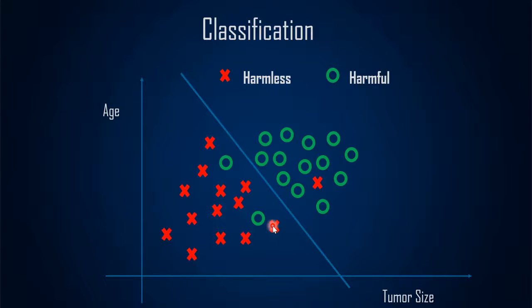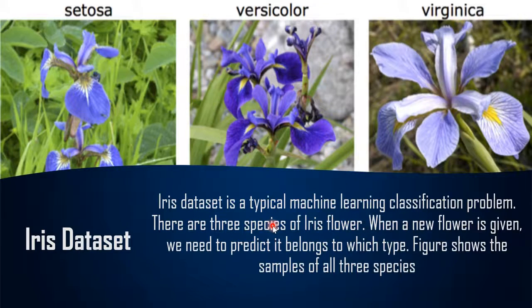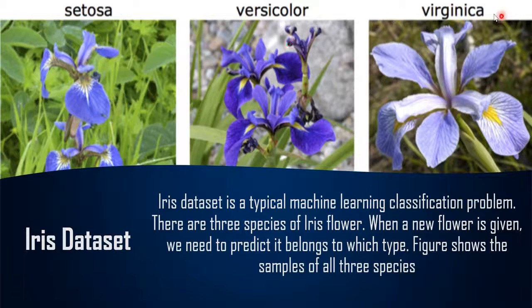Let's see one more last example, which we are going to see a demo on as well — it's very famous. The dataset is popularly called the Iris dataset, a flower dataset. There are three species of the iris flower: setosa, versicolor, and virginica. Once you have data for all three species, you train the model. In the future, when the machine learning model sees new data, it will predict whether the given input is of type setosa, versicolor, or virginica. This is again classification — dividing and finding out the classes. It's a typical machine learning classification problem.